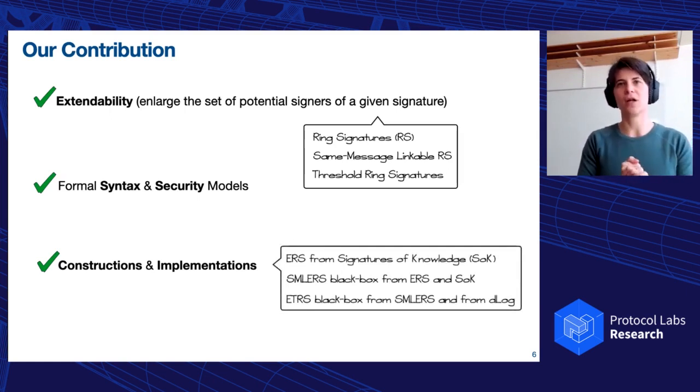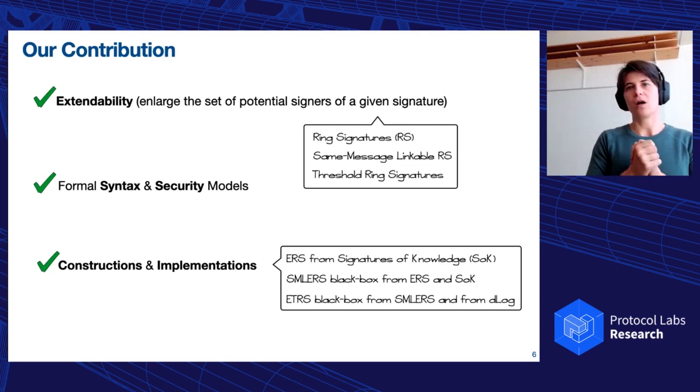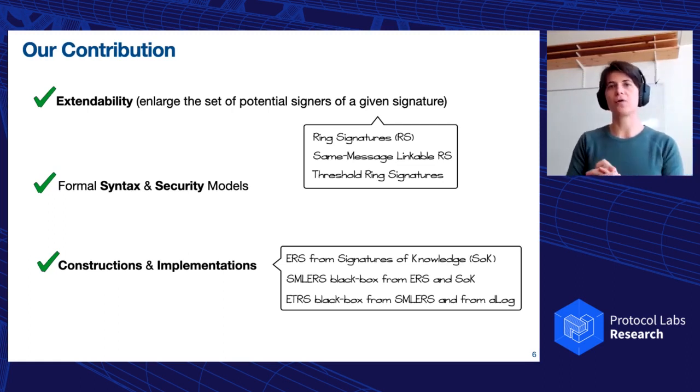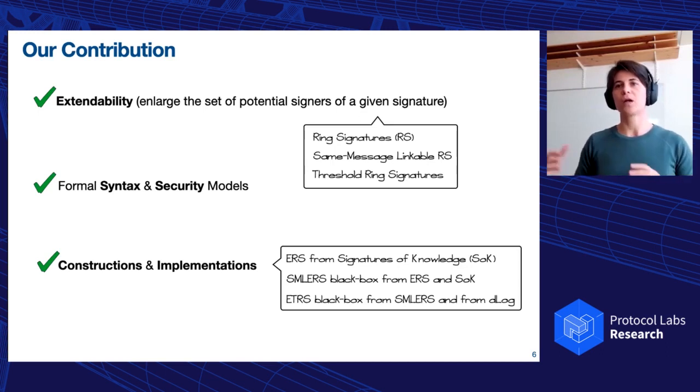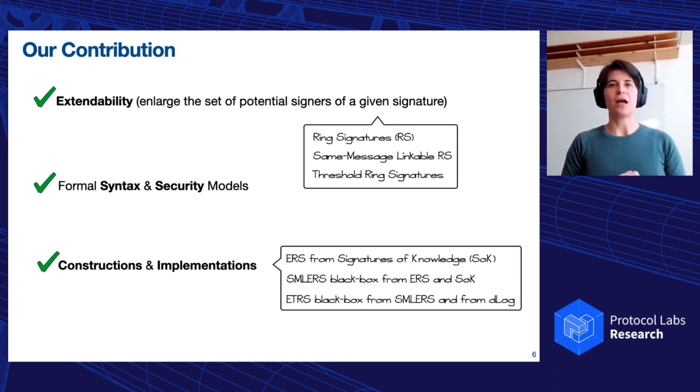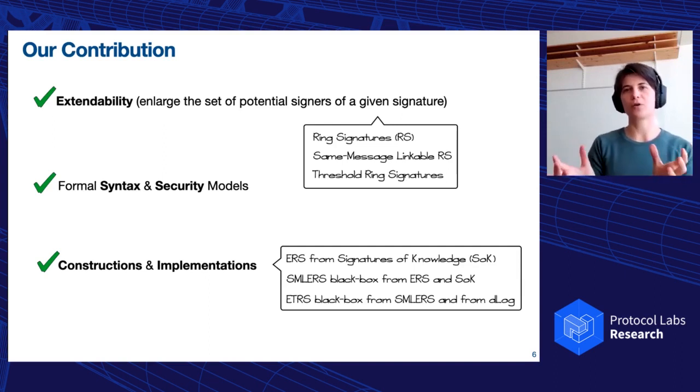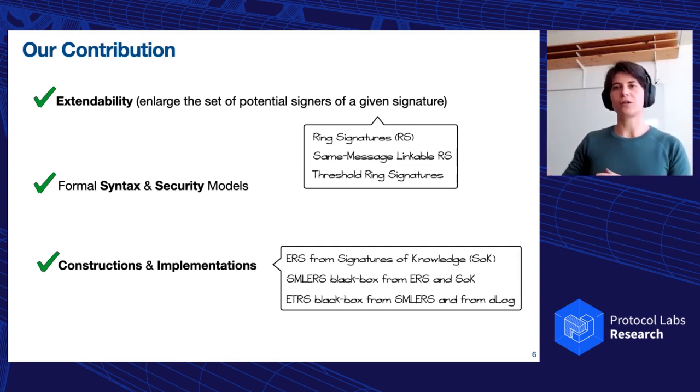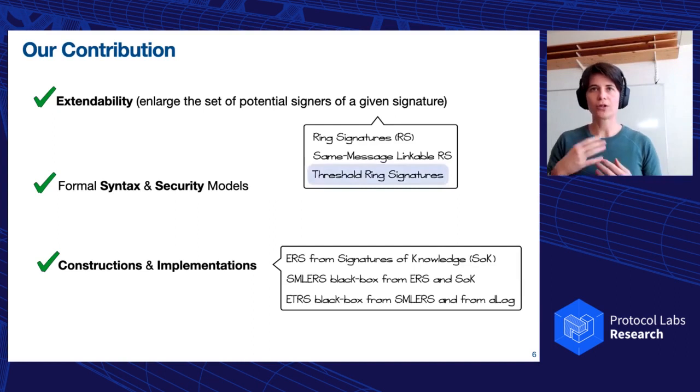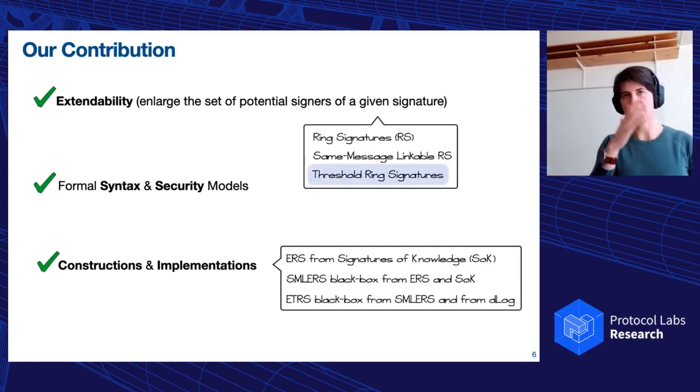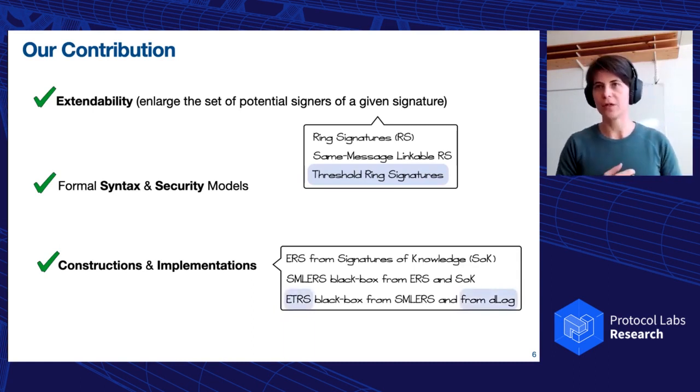Our contribution. First of all, we present this notion of extendability, which essentially is to enlarge the set of potential signers of a given signature. We do so not just for threshold ring signatures, but also for ring signatures and for same message linkable ring signatures. Then we provide a formal syntax and a security model for each of these primitives with this extendability feature on. And finally, we provide constructions and implementation. We have more or less as many constructions as authors and some implementations. We have construction of extendable ring signatures from signature of knowledge. We have the same message linkable extendable ring signatures constructed in a black box way, and then we have extendable threshold ring signature, which is the coolest thing that can be constructed in a black box way or a construction that is based on the D log.